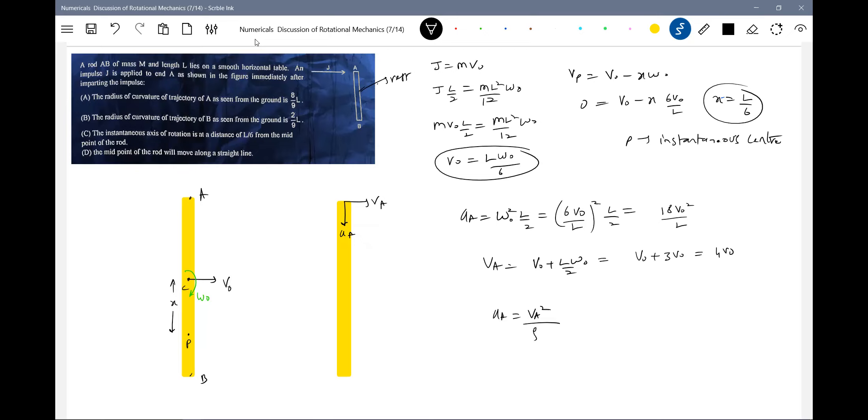So now I'll get the radius of curvature: acceleration of A equals v_A square by rho. Let me write rho. This will become 18 v_naught square by l equals 16 v_naught square by rho. So rho equals 8l by 9.